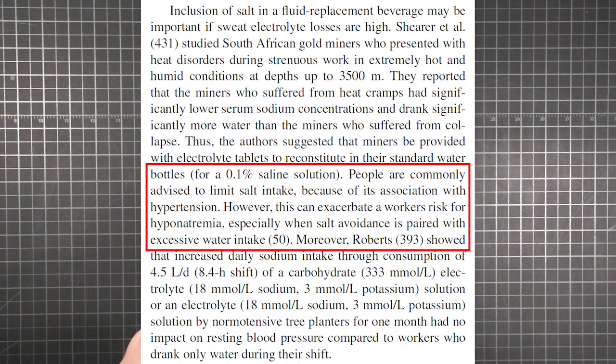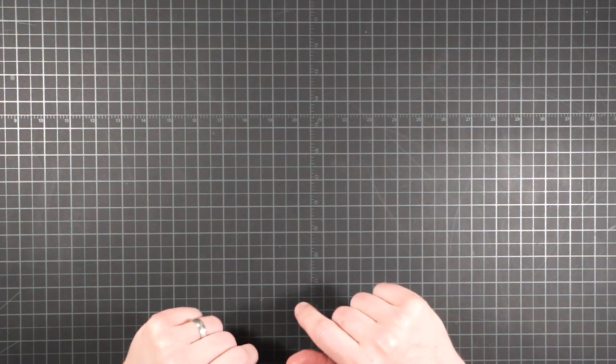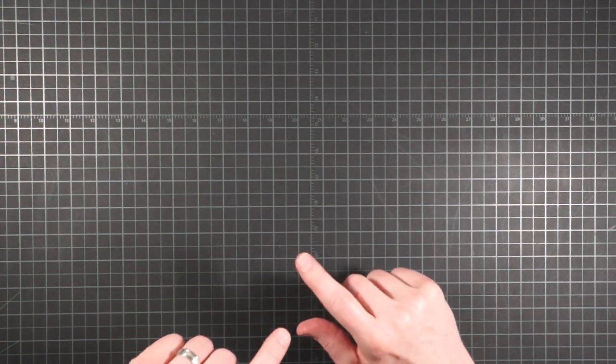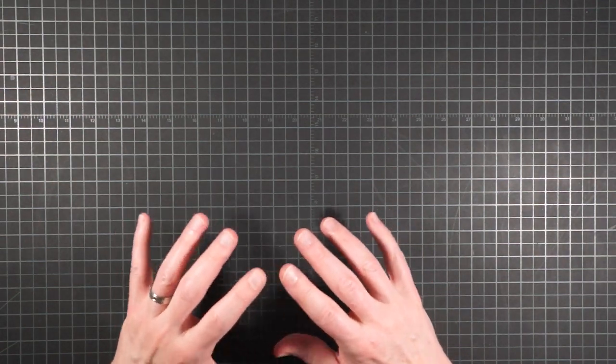People are commonly advised to limit salt intake because of its association with hypertension. However, this can exacerbate a worker's risk for hyponatremia, especially when salt avoidance is paired with excessive water intake. So for a homemade visual demonstration of how replacing fluid losses with just plain water can lead to dangerous consequences, see part four.